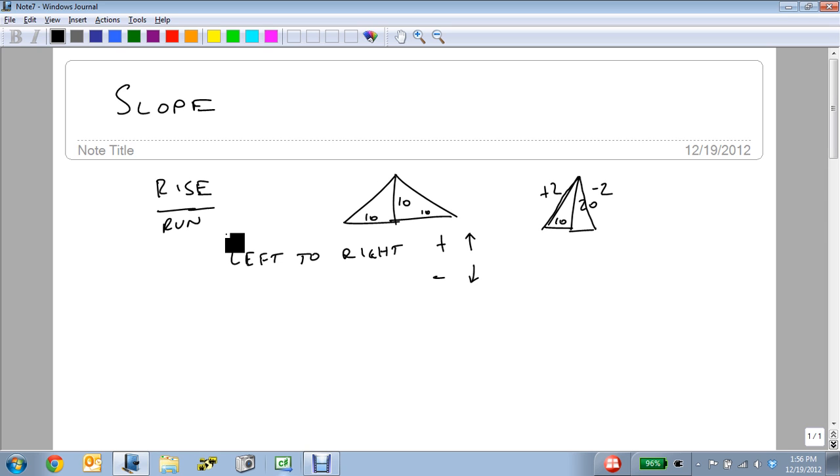Remember our definition of rise over run? That's where I'm getting this 2 from. It's 20 divided by 10, how much it went up divided by how much it went over. As it comes down, this would be minus 20 because it drops 20 and it goes over 10 to give a minus 2.